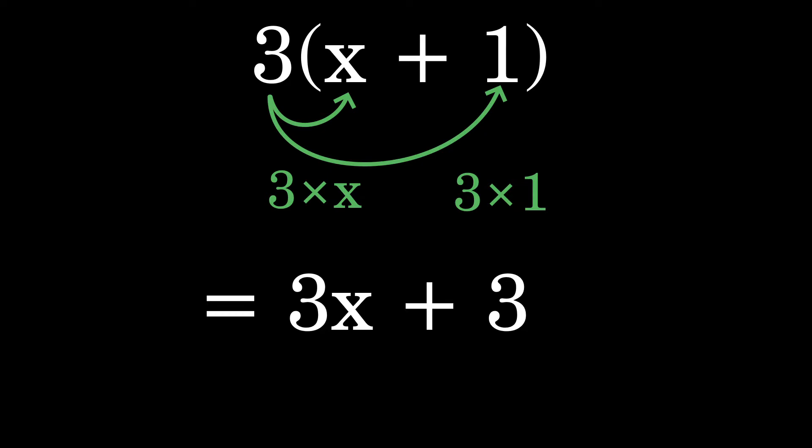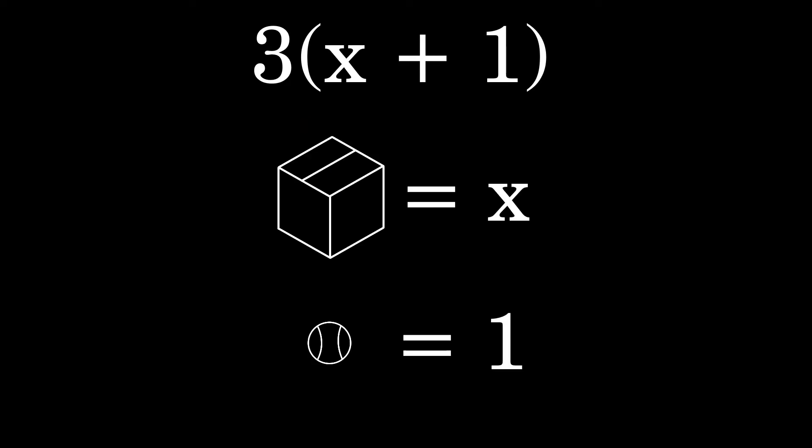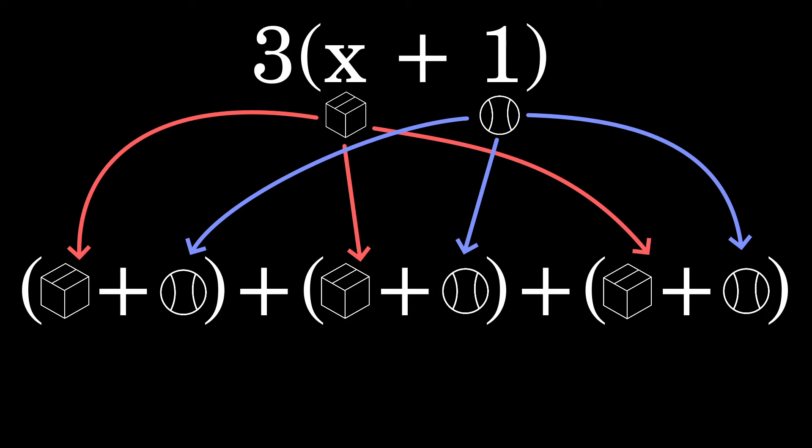I'll cover this just very quickly. Imagine for a second that x is a box filled with some number of tennis balls and that one is a single tennis ball. The leading term in our group implies that we have three groups. So we can expand this out into addition. So we have three boxes of tennis balls and three leftover individual tennis balls. That's how the distributive property works. It's repeated addition of groups, just like how multiplication is repeated addition.